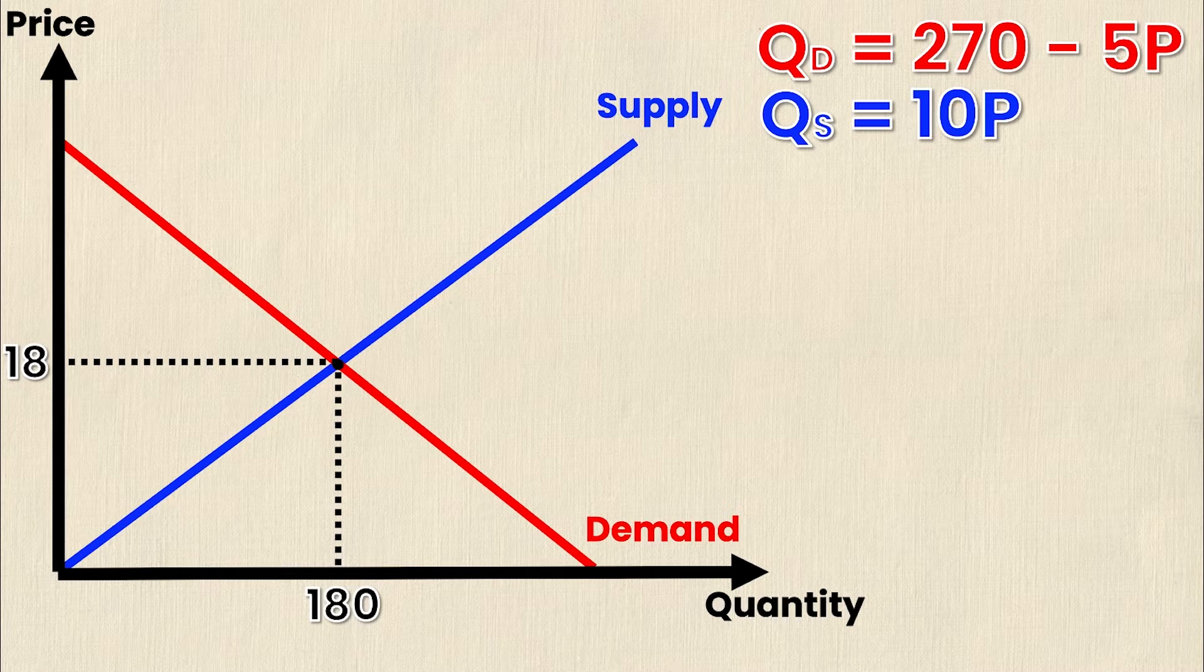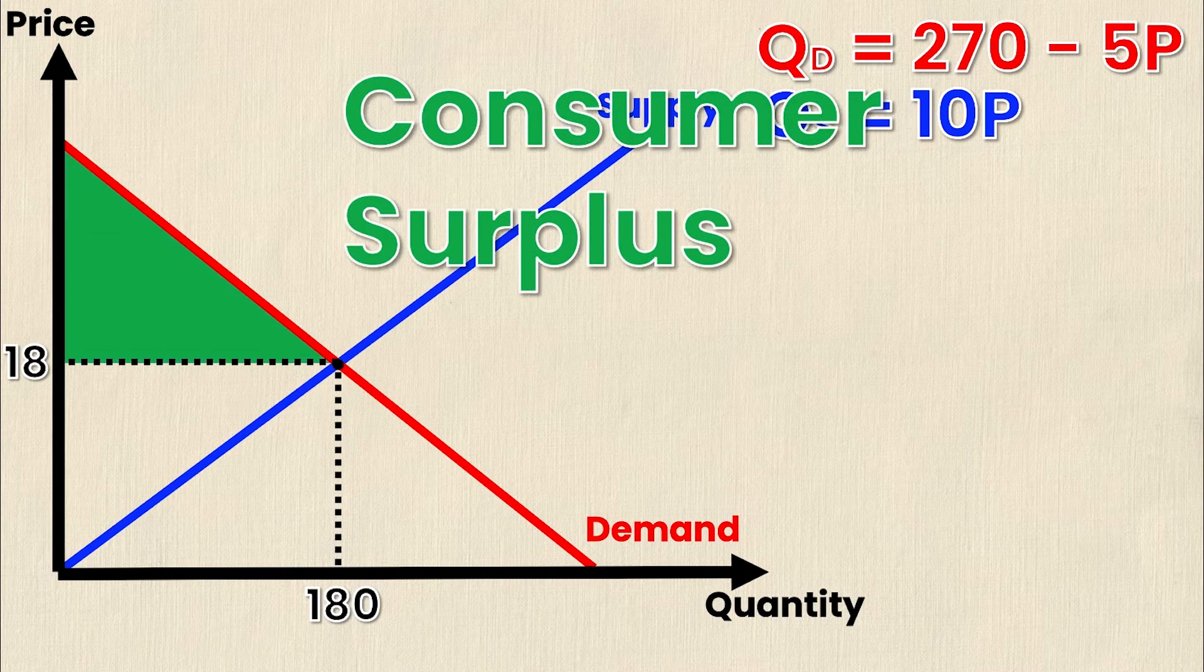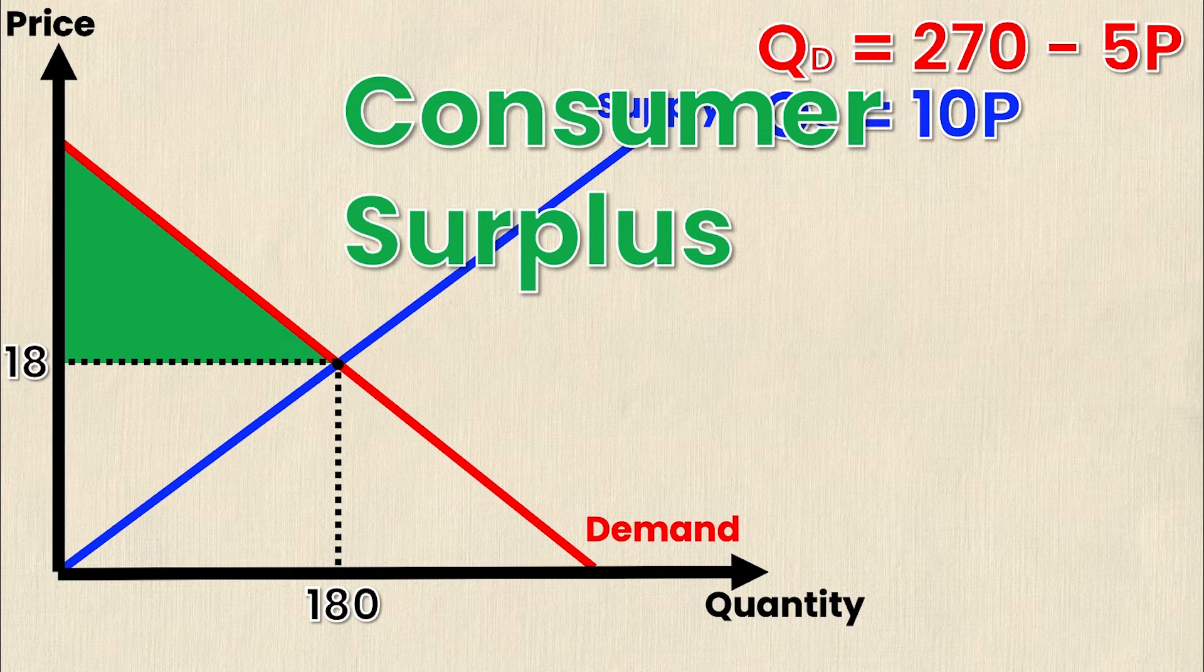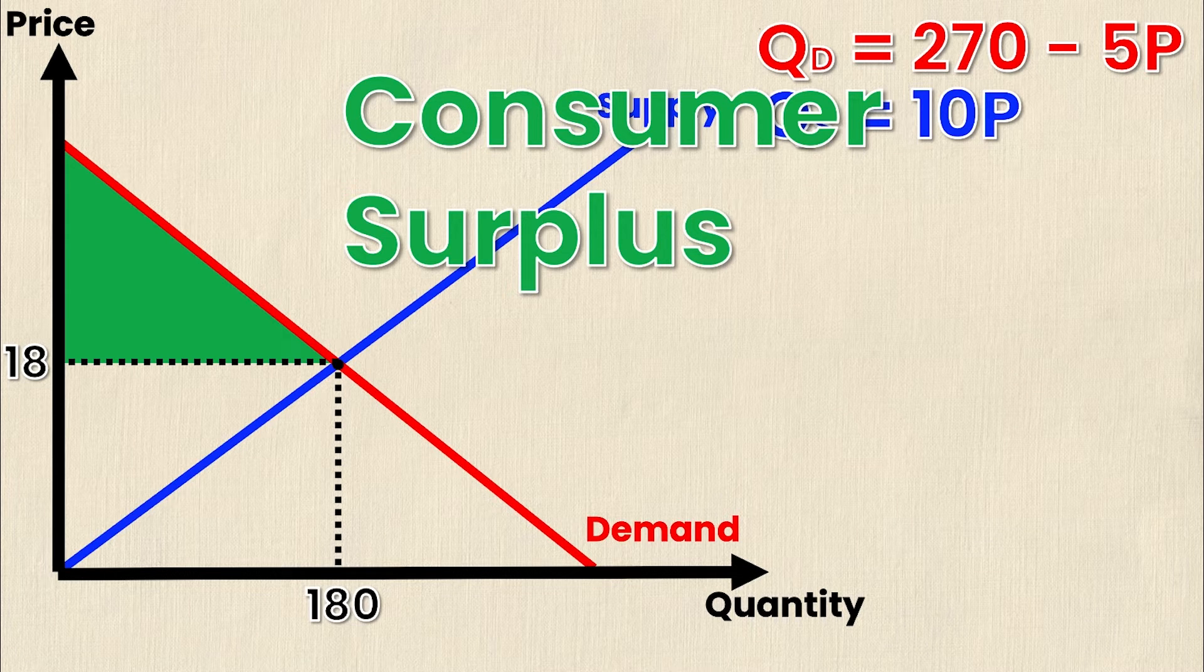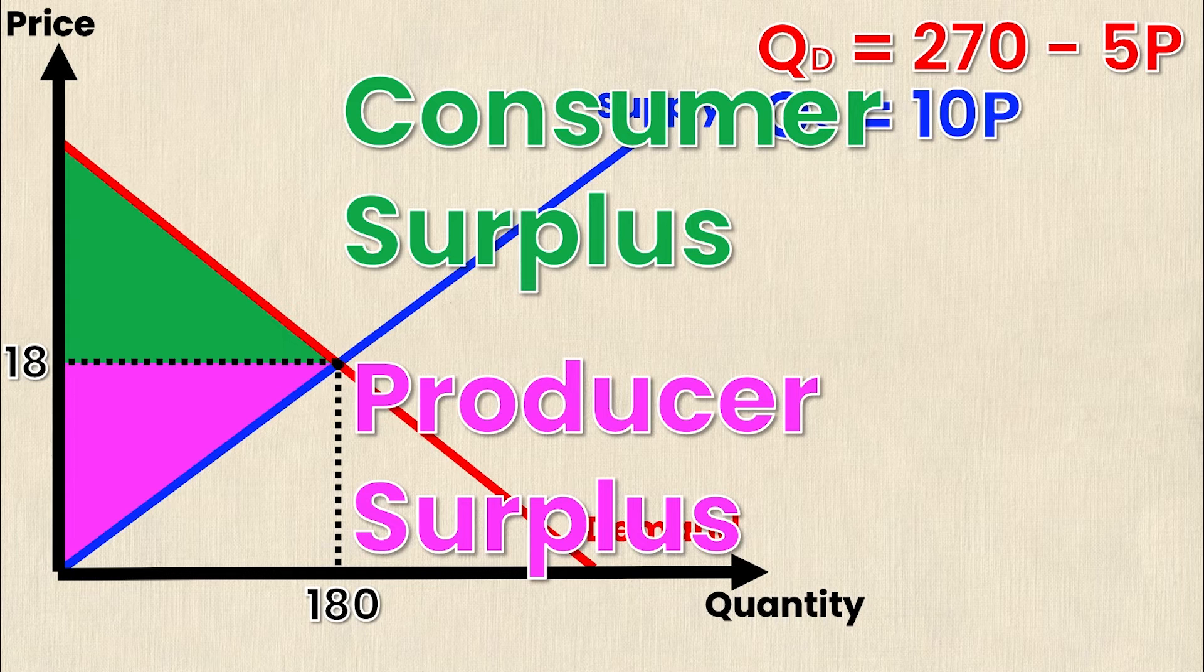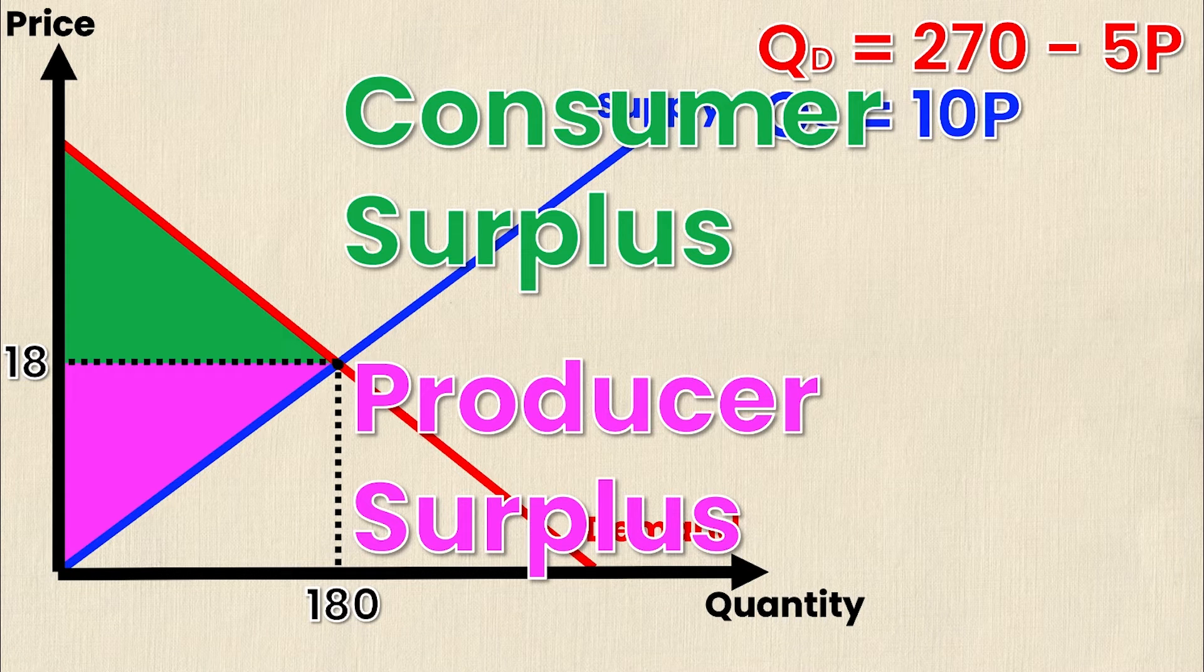Again I glossed over calculating P star and Q star because we do have videos on the channel for that, so if it's something you're struggling with please check those videos out. Reminding you of our other video where we talked about total surplus, consumer surplus is the area below the demand curve and above the selling price. On the contrary, producer surplus is above the supply curve and below the selling price. So these two triangles are what we calculated in our previous video.